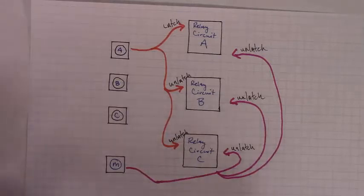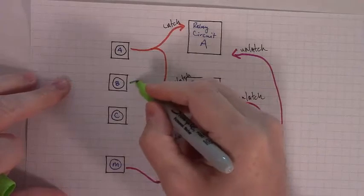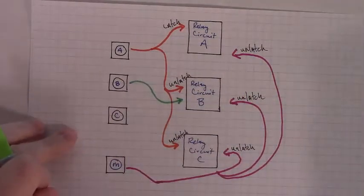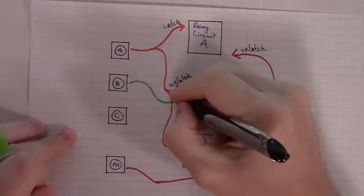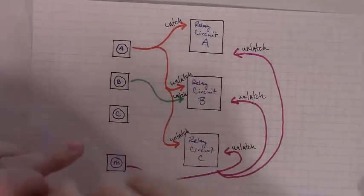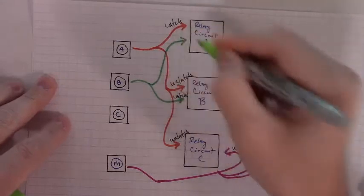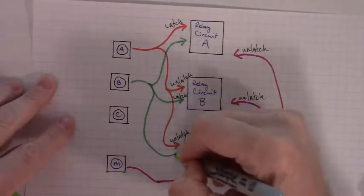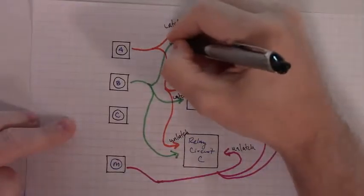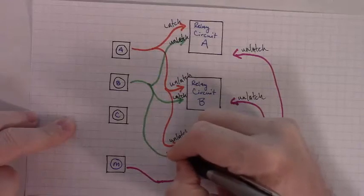Then, what happens with button B? Well, we want a single push of button B to latch on relay circuit B. We want this to be a latch event. And then, while at the same time, that single push should also unlatch A, and it should unlatch C. This should be an unlatch event, and this should be an unlatch event.